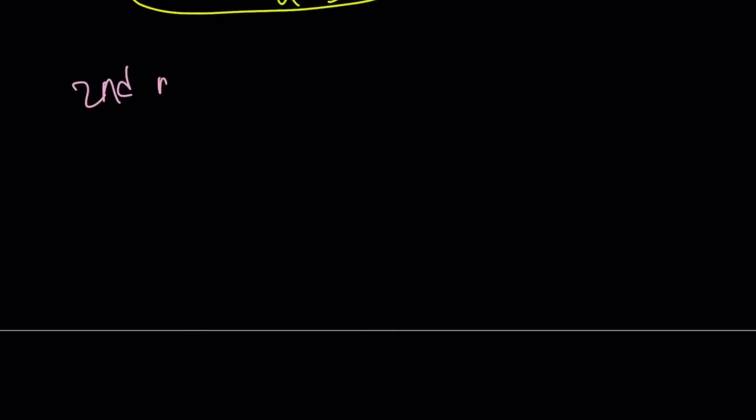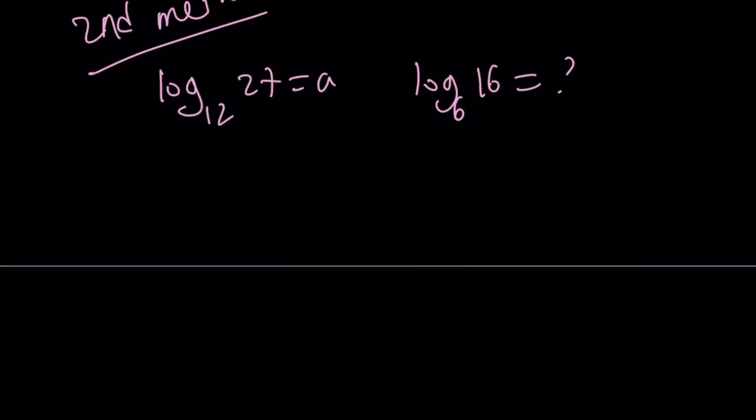So my second method, I don't know if it's shorter or easier. You're going to decide. But here's what we have: log 27 is A, and we're supposed to find log 16, and there are different bases. So here's what I'm going to do. I'm going to use COB formula. What is it? Change of base. I know somebody used this in the comments, and I'm just stealing it. Hopefully you don't mind.